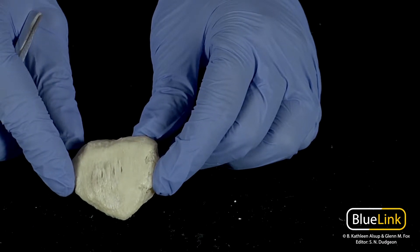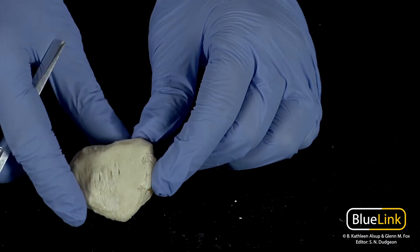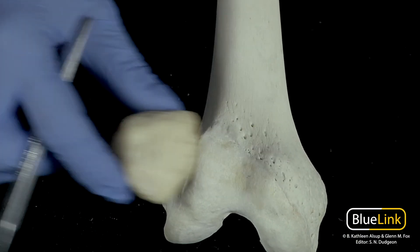This particular sesamoid bone is going to form in the tendon of your quadriceps femoris, and it's going to articulate with the patellar surface of the femur.